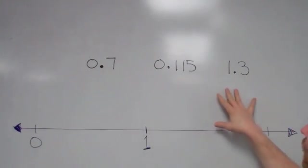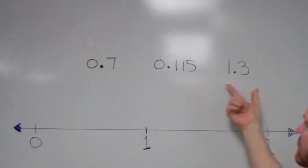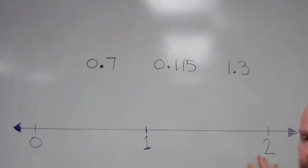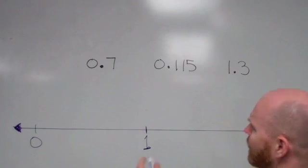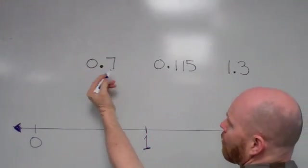All right, in this video I'm going to show you how to place these three decimals on a number line. And let's start with this one, 0.7.